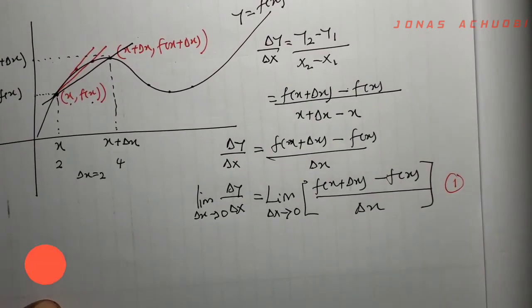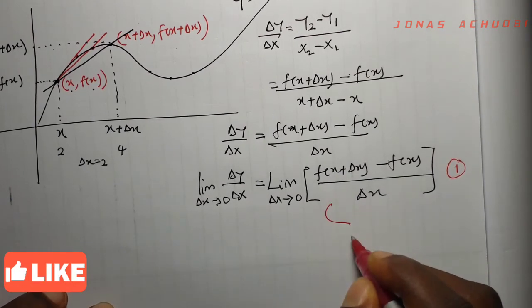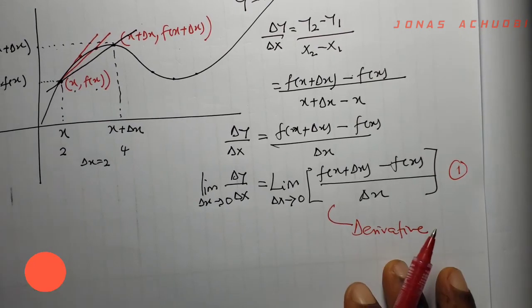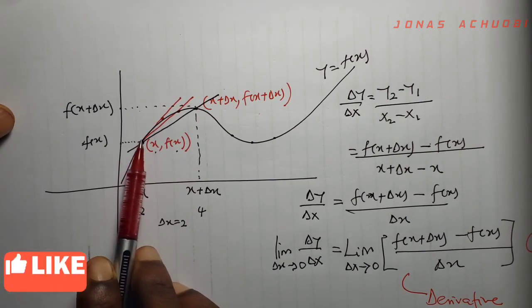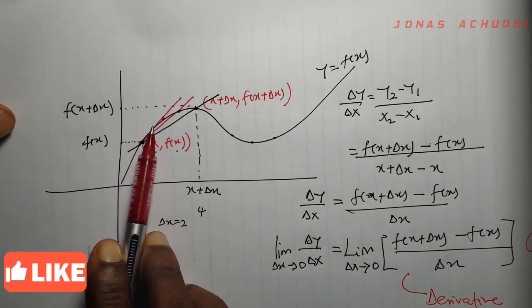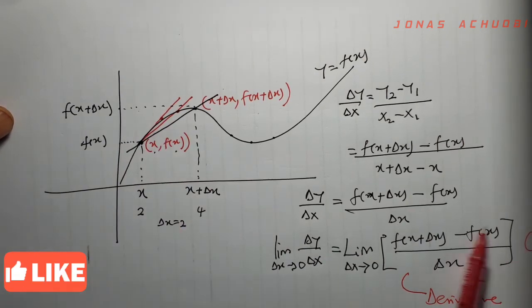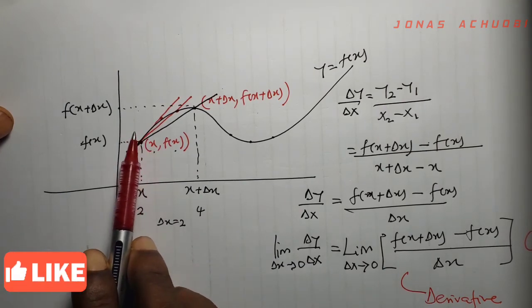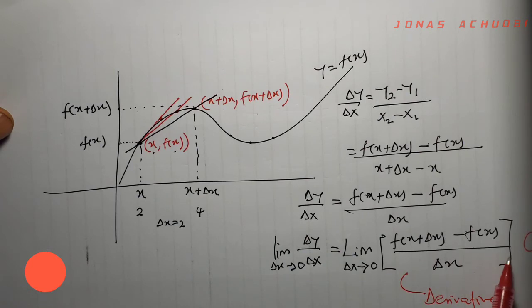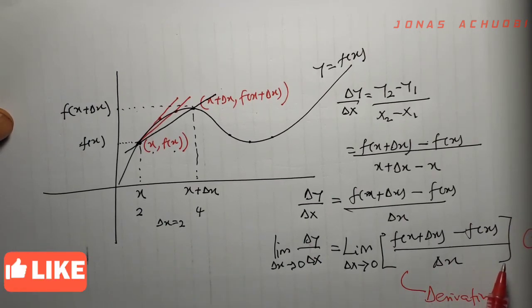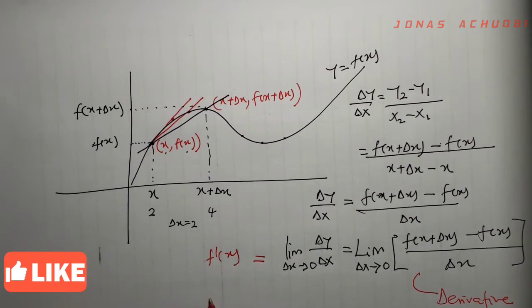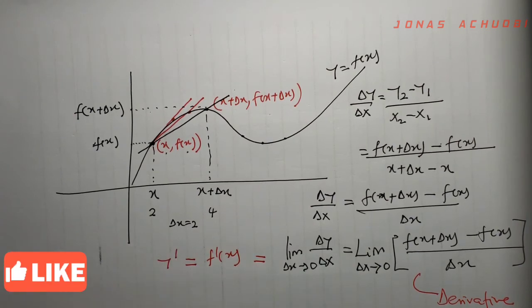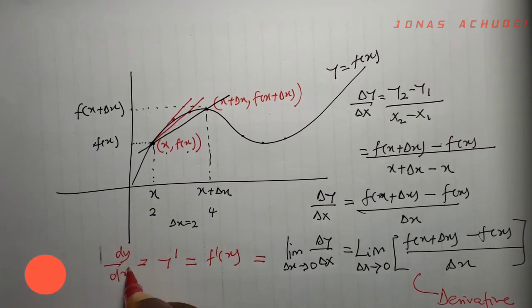This equation is what we refer to as the derivative of the function f of x at the point x, f of x. This derivative at this point will be different from the derivative at the next point. With this formula, whatever point's derivative we require, we simply substitute the value of that point into the equation. We call this the derivative of the function f of x, and we denote it as f prime of x, or y prime, or dy over dx.